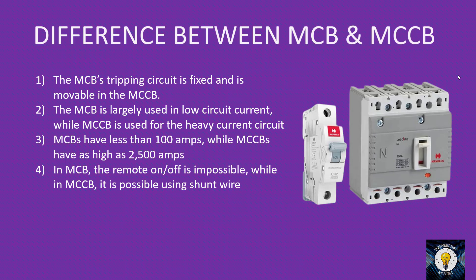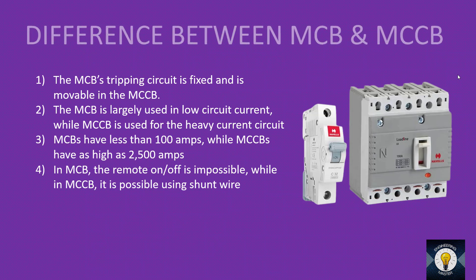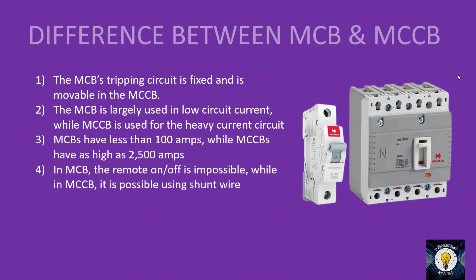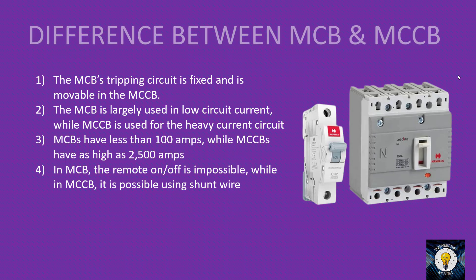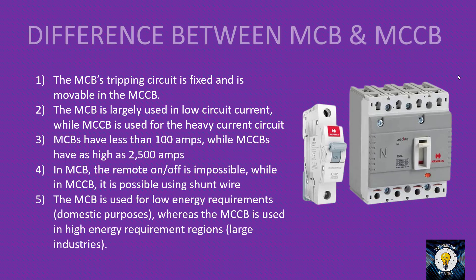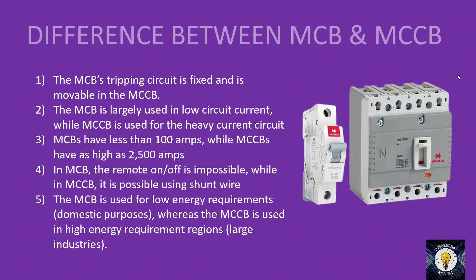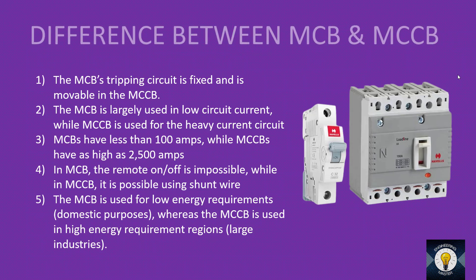In MCBs, remote on/off is not possible as it is not inbuilt. In MCCBs it is possible using a shunt wire. That means if the panel is in one location and you want to operate it from another location, you can do it in MCCB using a shunt wire and an emergency push button switch. The fifth difference is that MCBs are used for low energy requirements like domestic purposes, while MCCBs are used for high energy requirements like industrial purposes.